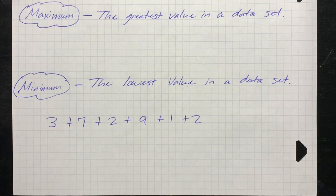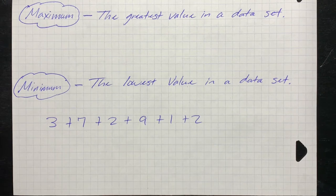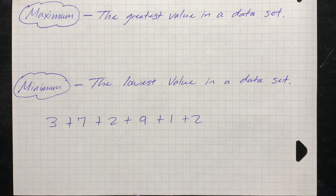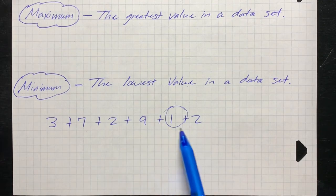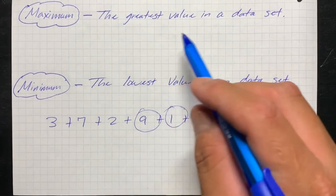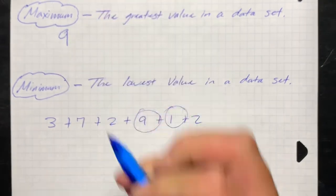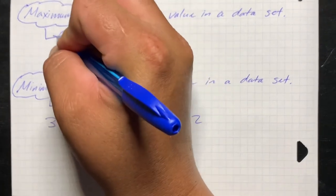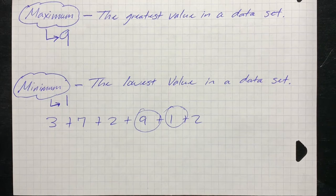The next measure of central tendency is called the maximum and the minimum. The maximum is the greatest value in a data set — the largest value. The minimum is the lowest value in the data set — the smallest value. Looking at our data set — three, seven, two, nine, one, and two — one is the smallest number, so the minimum equals one. Nine is the largest, so the maximum equals nine.